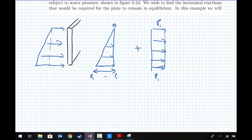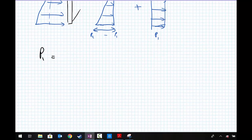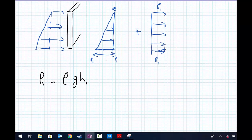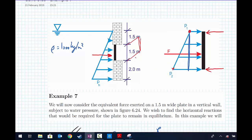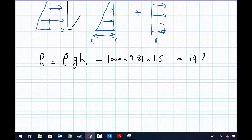The first thing we'll do is calculate the pressures P1 and P2. P1 equals rho G H1. H1 is 1.5 meters and H2 is at the bottom of this gate, which equals 3 meters. Therefore, we have 1,000 kilograms per meter cubed times 9.81 times 1.5 meters height equals 14,715 newtons per meter squared.